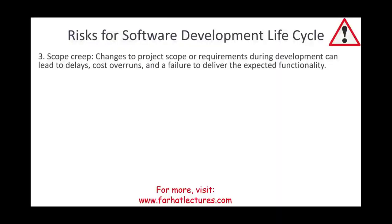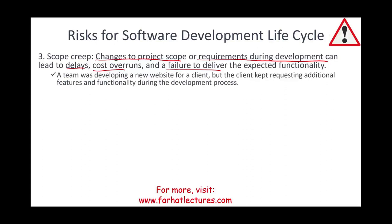A third risk is scope creep. This means making changes outside the agreed-upon requirements and scope. Changes to project scope during development can lead to delays, cost overruns, and failure to deliver. For example, a team developing a new website had a client who kept requesting additional features and functionality during the development process. It's very important to have everything clear upfront to avoid scope creep.